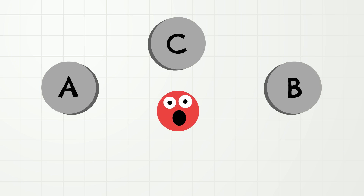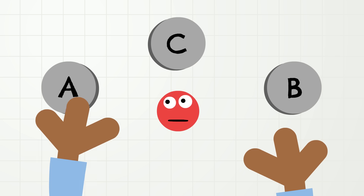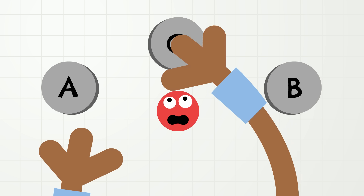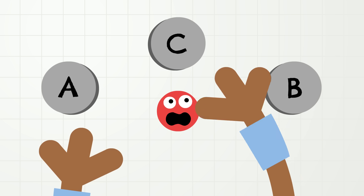Instead of the order going left and right, it is going to go left, right, up. Let's do this together with our hands and our voices. Ready? Go! A, B, C. A, B, C. A, B, C.